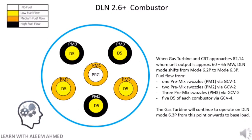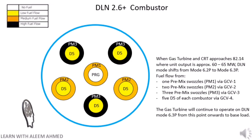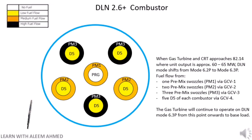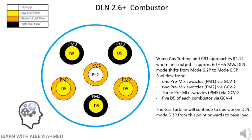When the gas turbine CRT approaches 82.14, where the unit output is approximately 60 to 65 megawatts, the DLN mode shifts from mode 6.2P to mode 6.3P. At this change, fuel will flow from 1 premix swazzle PM1 via GCV1, 2 premix swazzles PM2 via GCV2, 3 premix swazzles PM3 via GCV3, and 5 D5 diffusion circuits via GCV4. Note that the gas turbine will continue to operate on DLN mode 6.3P from this point onwards to base load.